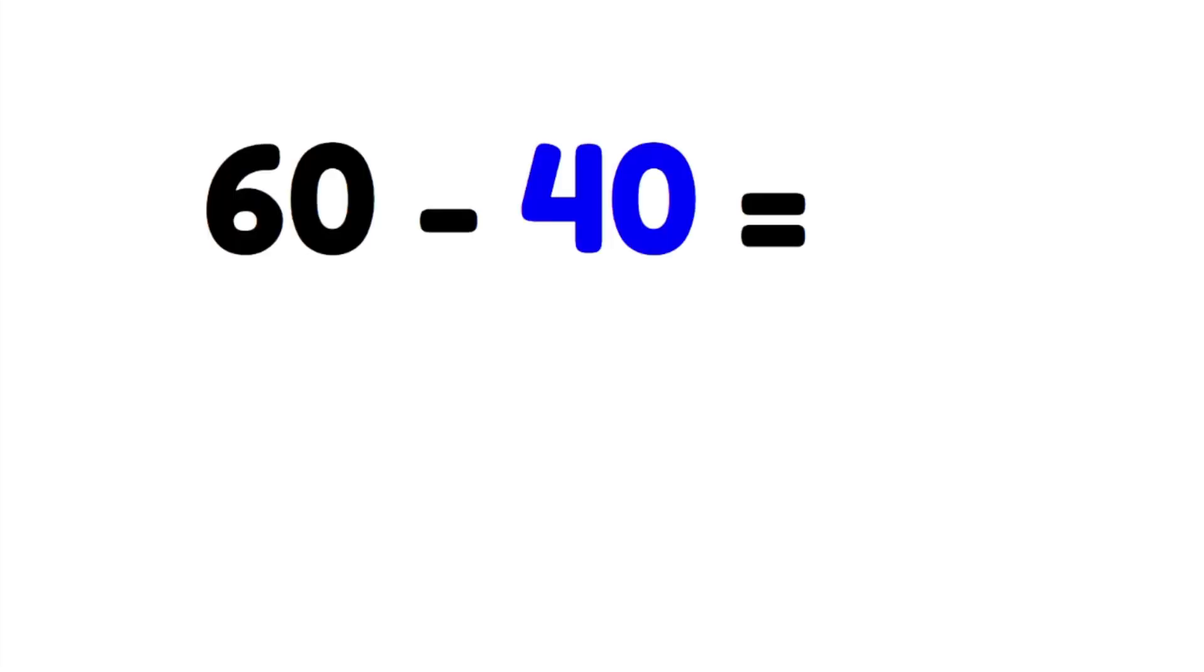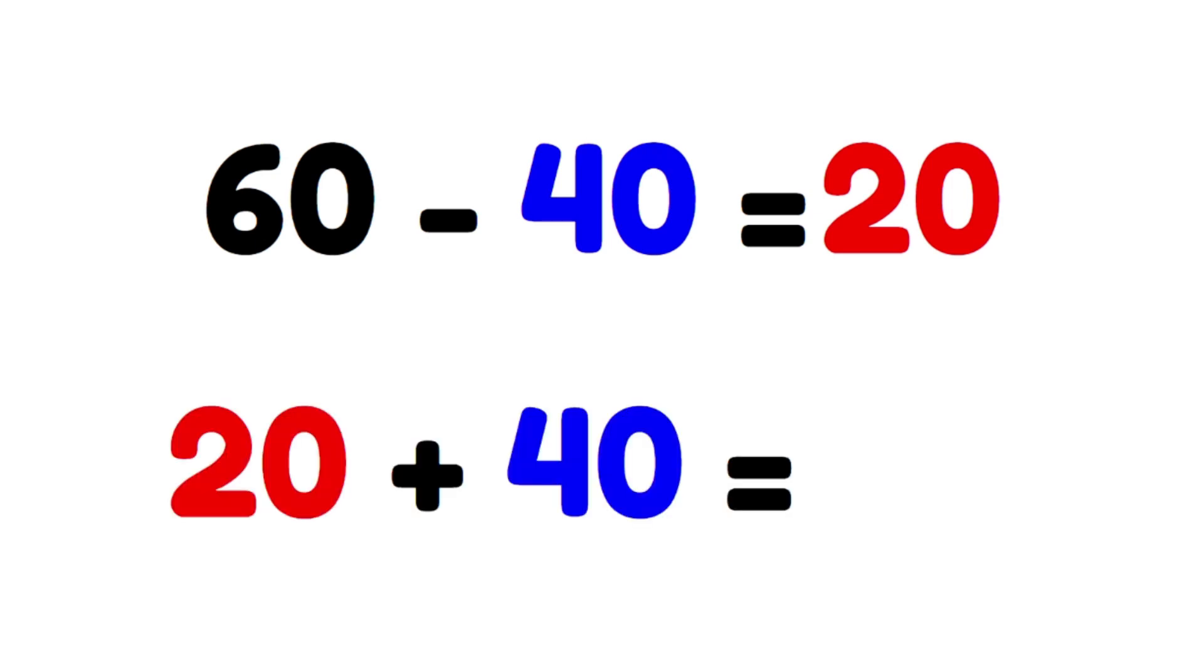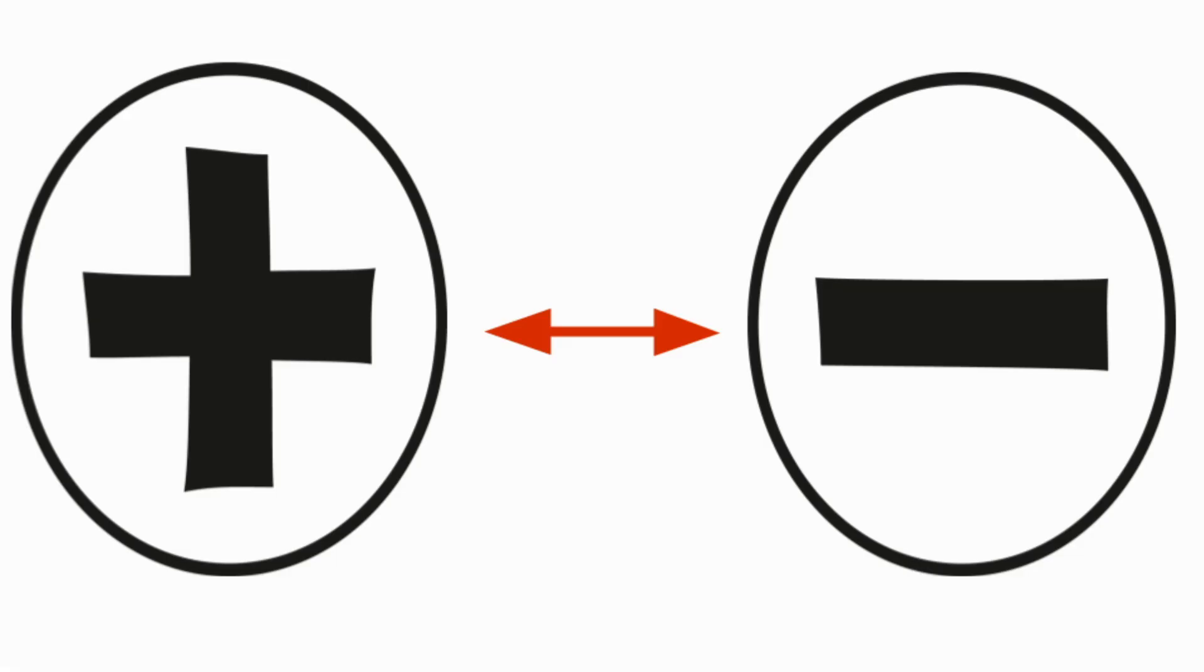Now that I know you can reverse the numbers, I can use that to solve problems. 60 take away 40 is 20. So I can use that to solve 20 plus 40. 20 plus 40 must be 60 because that's the reverse of the subtraction.